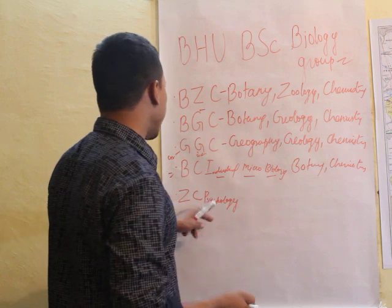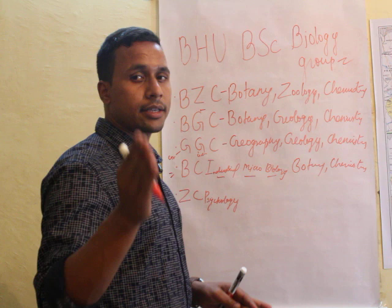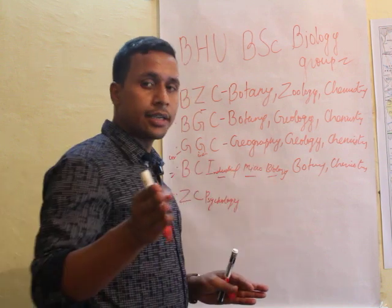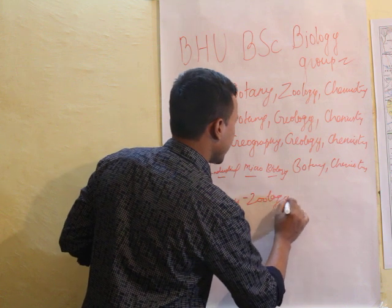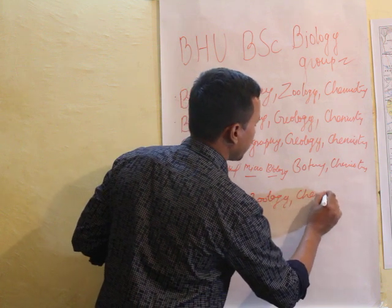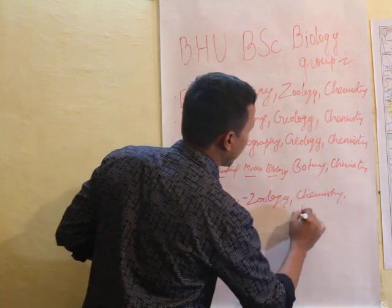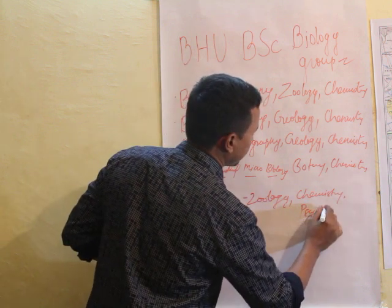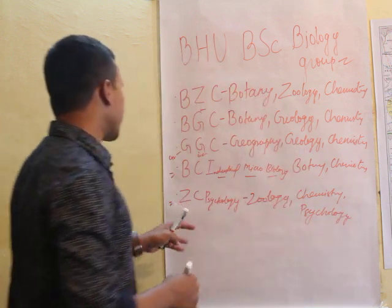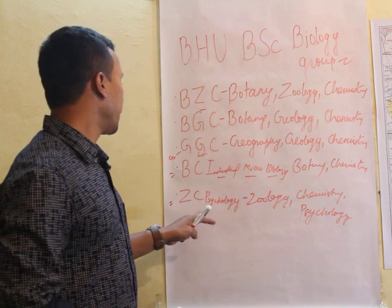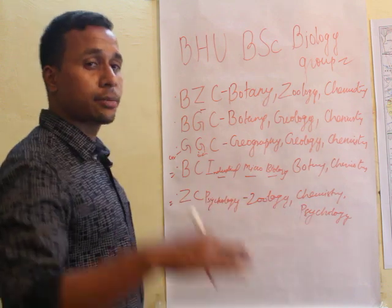The fifth and last group is ZCP — Zoology, Chemistry, and Psychology. So the last group is ZCP: Zoology, Chemistry, and Psychology.